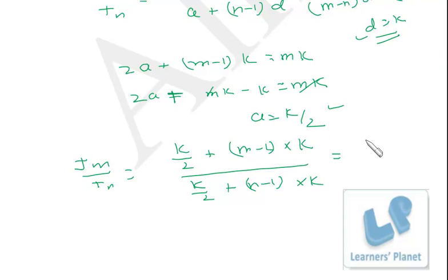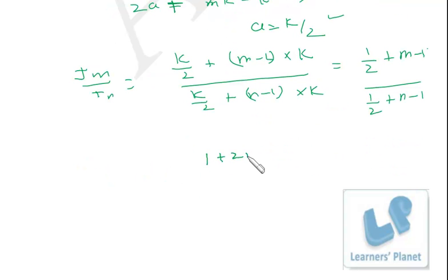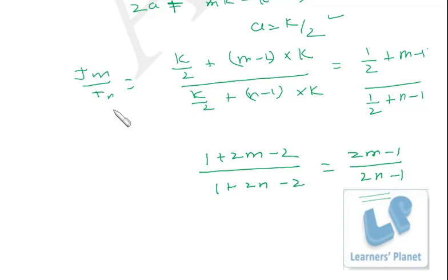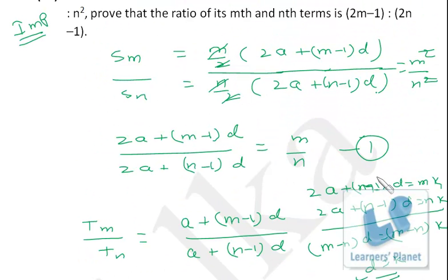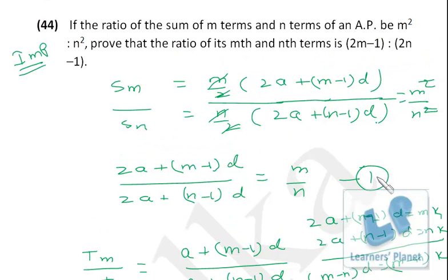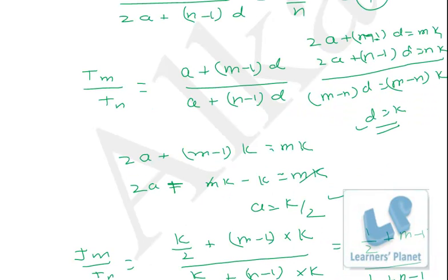Now t_m/t_n = [a + (m−1)d] / [a + (n−1)d] = [k/2 + (m−1)k] / [k/2 + (n−1)k]. Taking k as common and cancelling, we get [1/2 + (m−1)] / [1/2 + (n−1)]. Taking the LCM: (2m−1)/2 divided by (2n−1)/2, which gives (2m−1)/(2n−1). That is what we had to prove. In the next session we'll take more problems on arithmetic progression — bye!